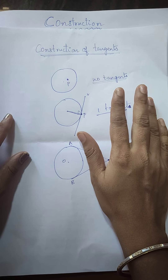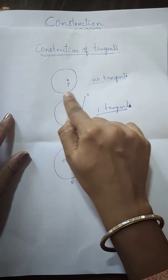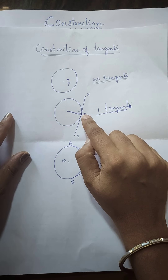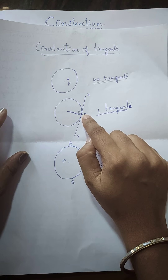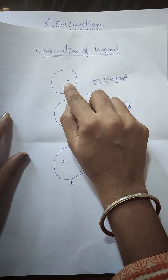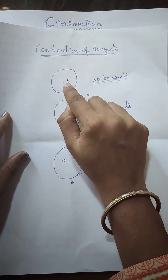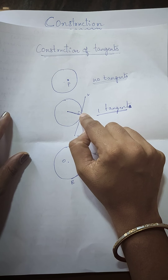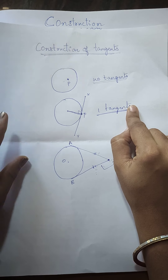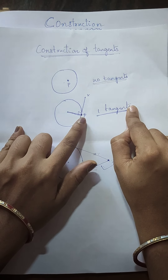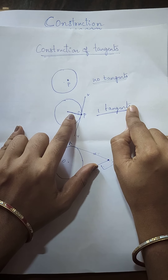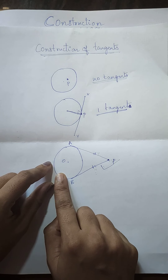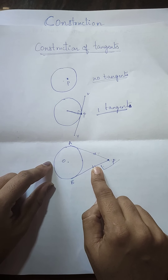As you all know, a tangent is a line segment which touches the circle at one point. The point may be inside the circle, on the circle, or outside the circle. If it is inside the circle, we cannot draw any tangent. If the point is on the circle, we can draw only one tangent, and that tangent is perpendicular to the radius — proved by theorem 1. If the point is outside the circle, we can draw two tangents, and these two tangents are equal in length by theorem 2.